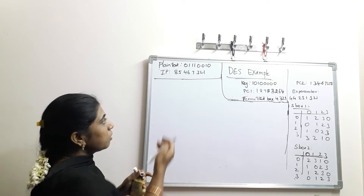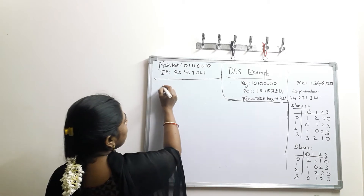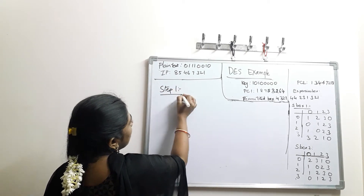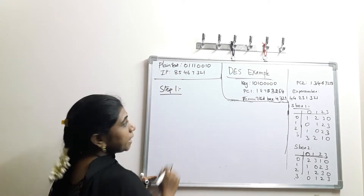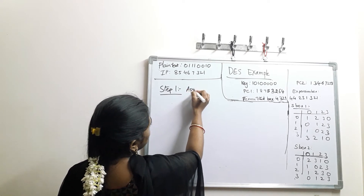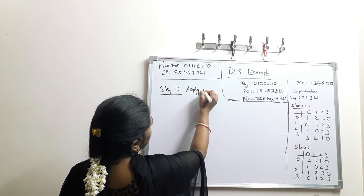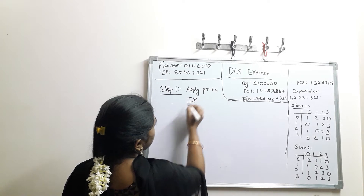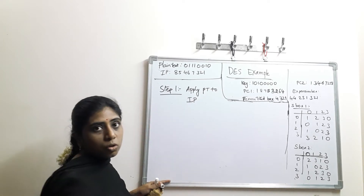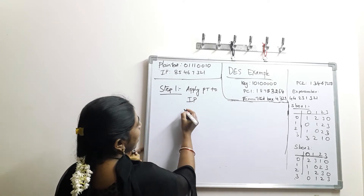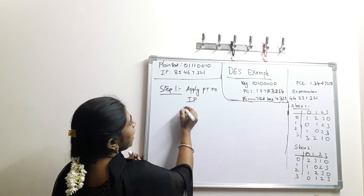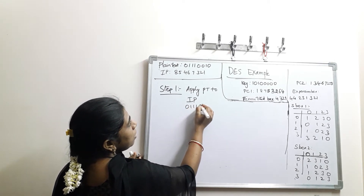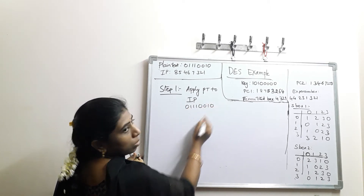In step 1, we are going to apply the plain text to the initial permutation. The plain text value is 0, 1, 1, 1, 0, 0, 1, 0.